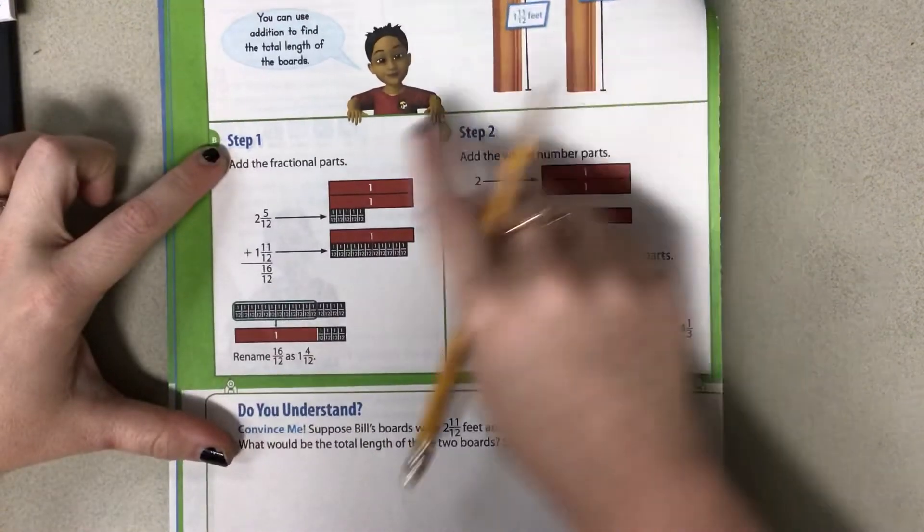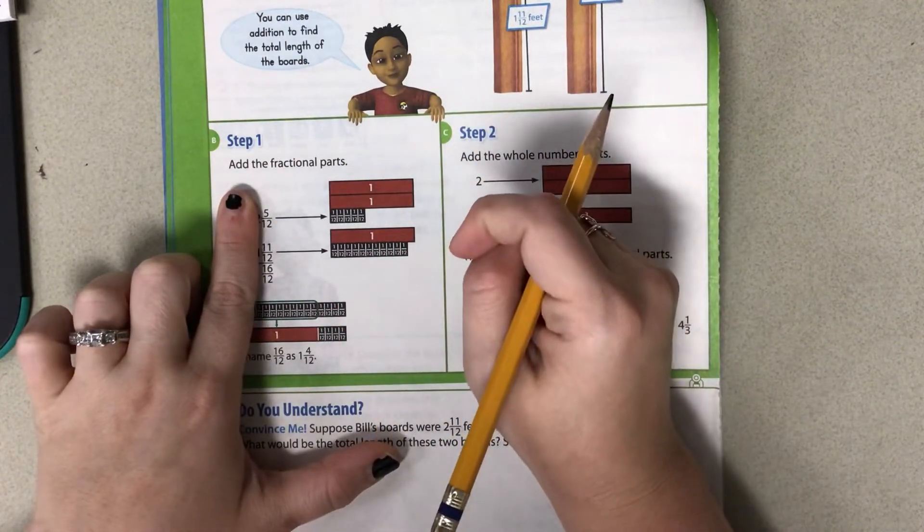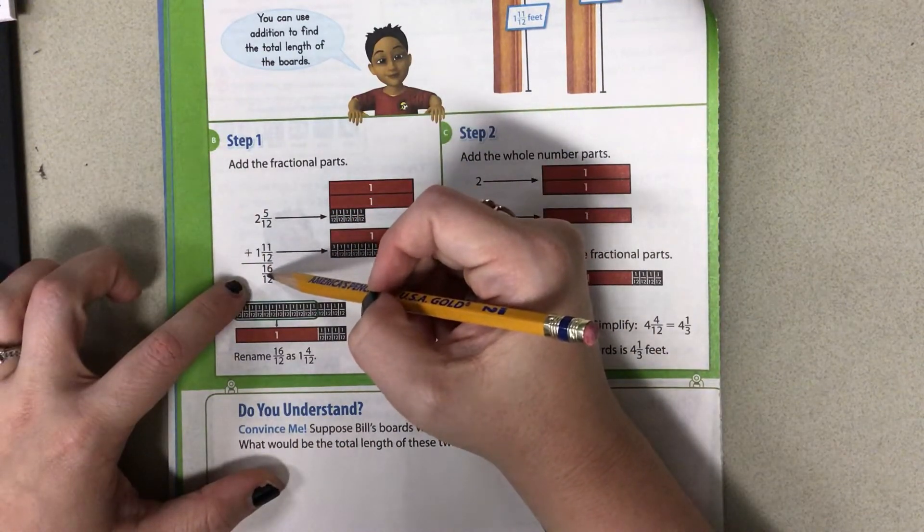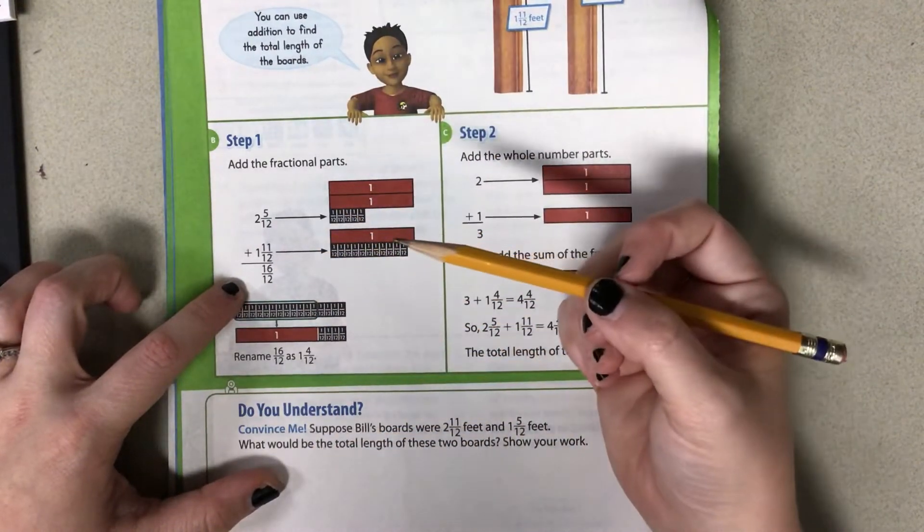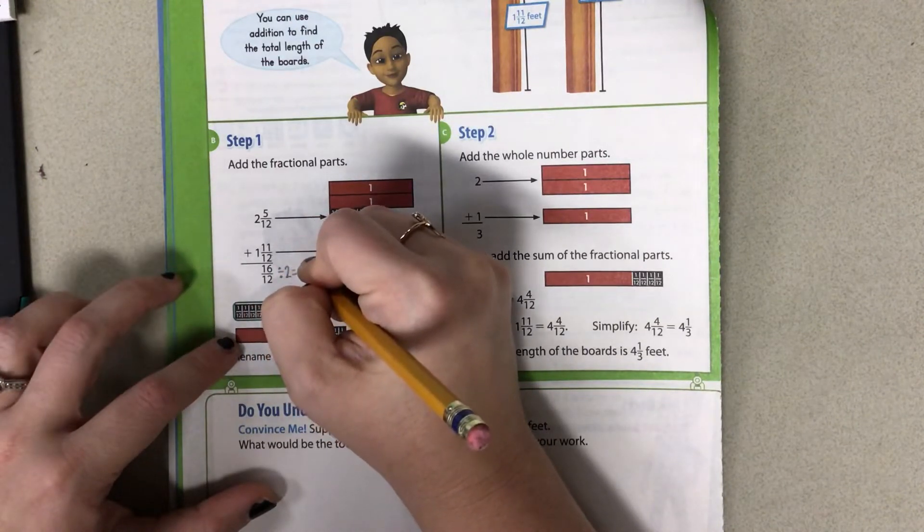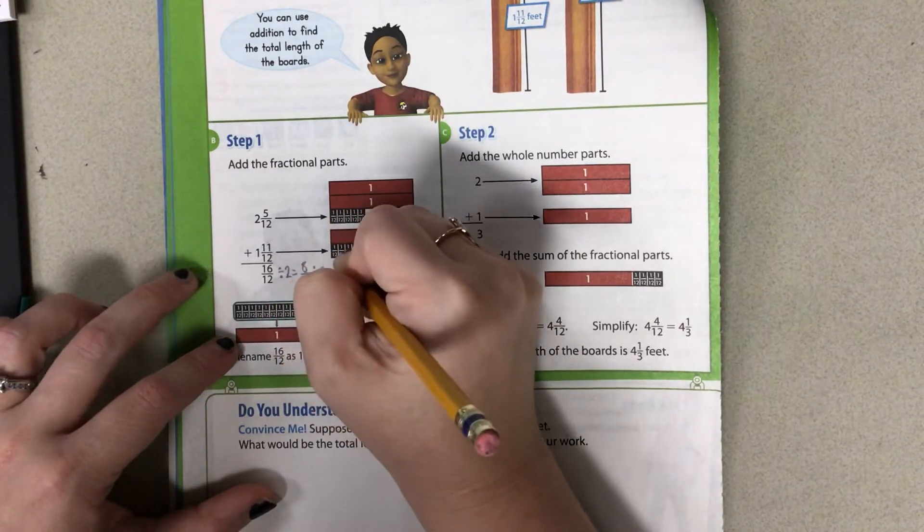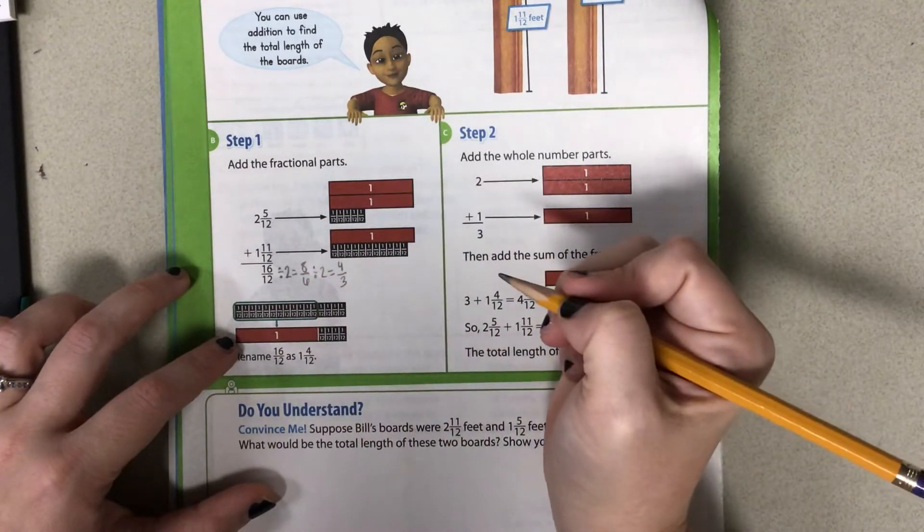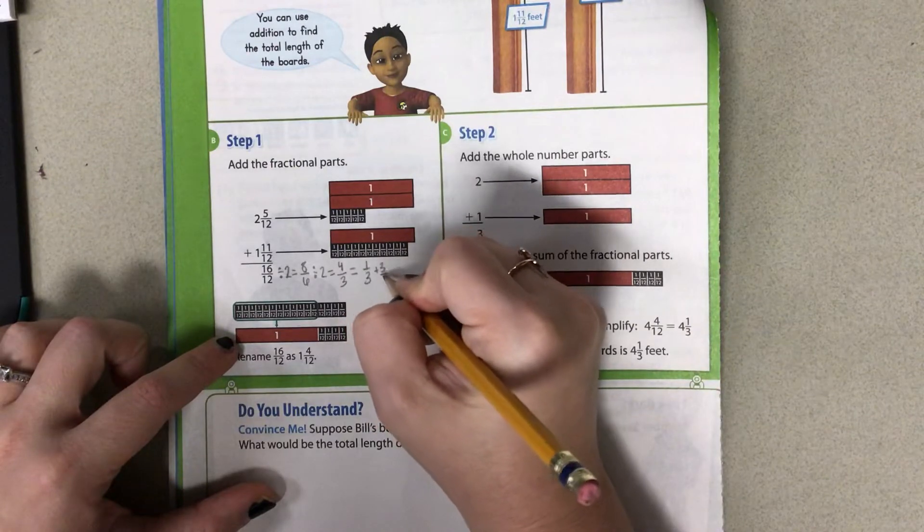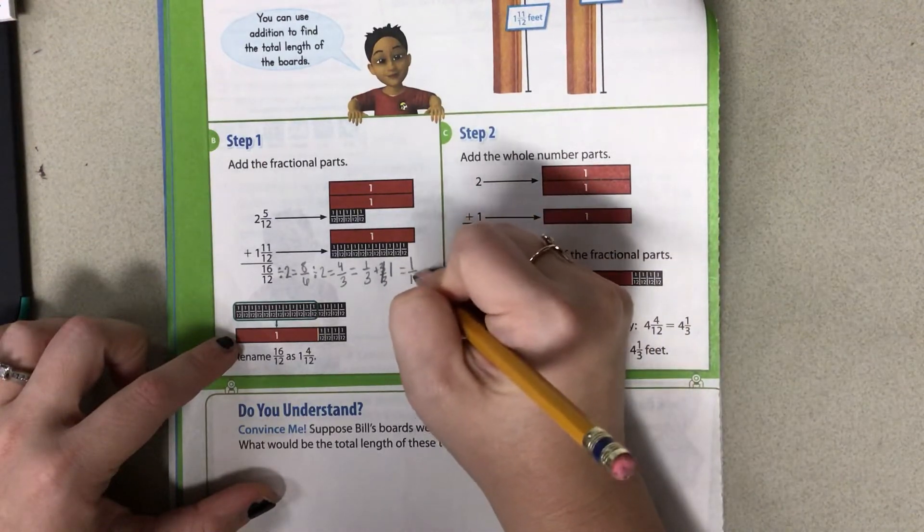So step 1 is going to be to add the fractional parts. So we start with the fraction pieces, kind of like we did in the POD the other day. We start with the smaller size. So 5 twelfths plus 11 twelfths gives us 16 twelfths. So now we have to simplify that. So you could divide both sides by 2 and get 8 sixths. You could divide it by 2 again and get 4 thirds. And then you can see that 4 thirds is the same as 1 third plus 3 thirds. And 3 thirds is the same as one whole. So you have 1 and 1 third.